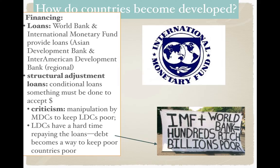There are also a couple of regional examples: the Asian Development Bank and the Inter-American Development Bank — one obviously for Asia, the other for the Americas. These are institutions that provide countries with loans, and those loans are then used for development. Some of the loans provided by the IMF and the World Bank are called structural adjustment loans, meaning the loan is conditional on something — something has to happen in order for the country to gain access to the money.